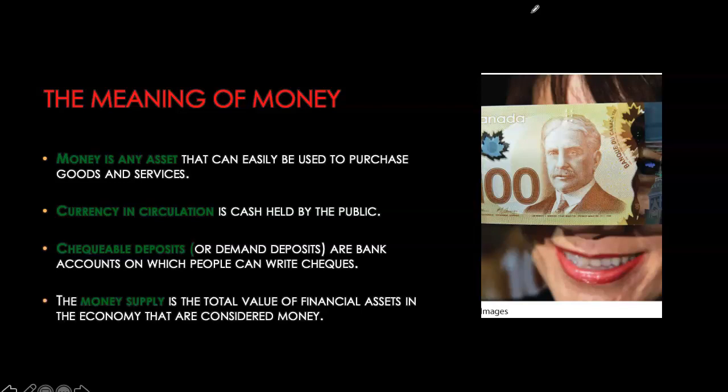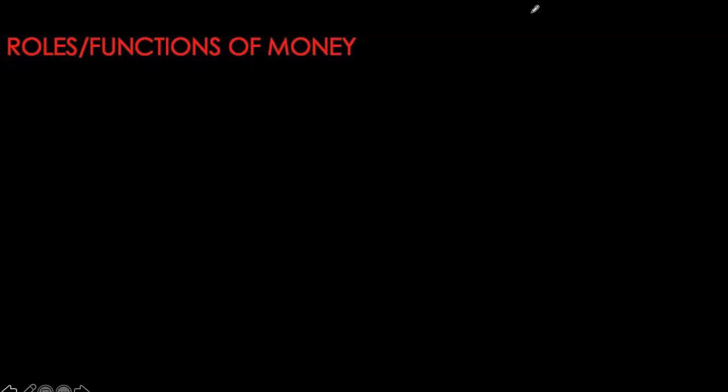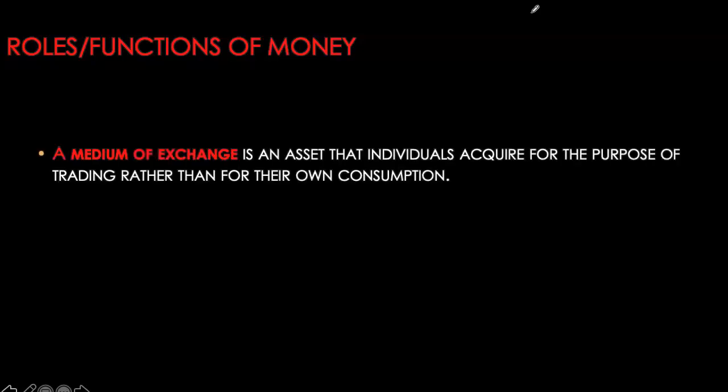By simply writing a check, you can use that asset as a form of payment, hence it is money. If I have different types of financial assets that can be used as money, in order to look at the total stock of money in my economy — or money supply — all I have to do is look at the total value of these financial assets considered money. Any asset which fulfills three main functions is considered money for that economy.